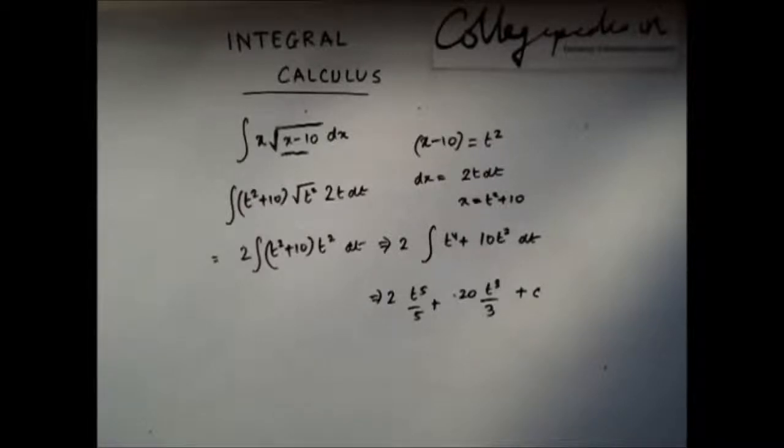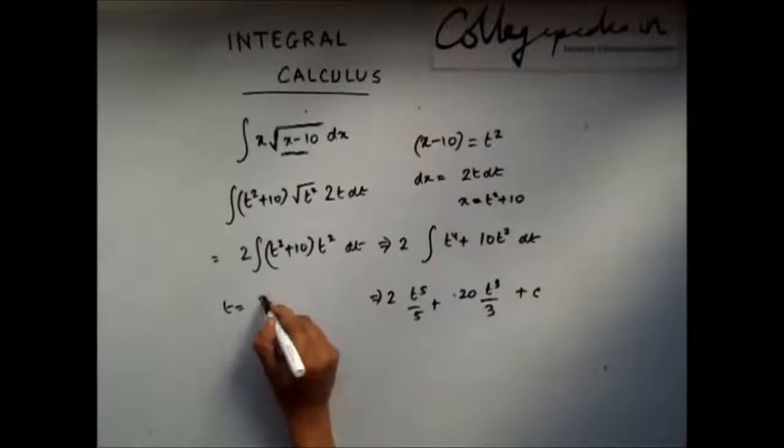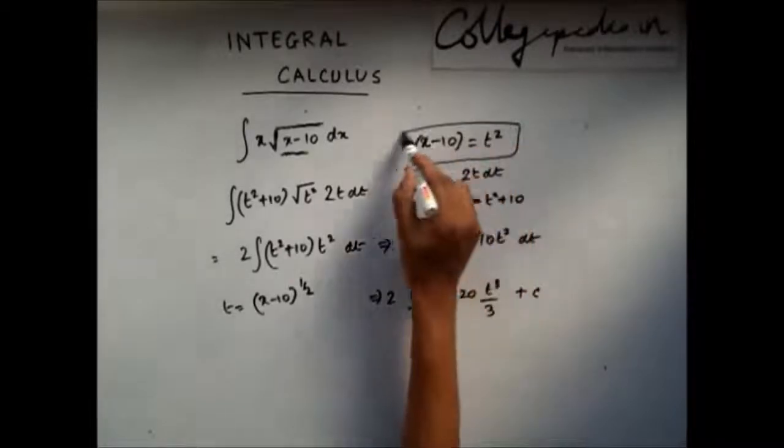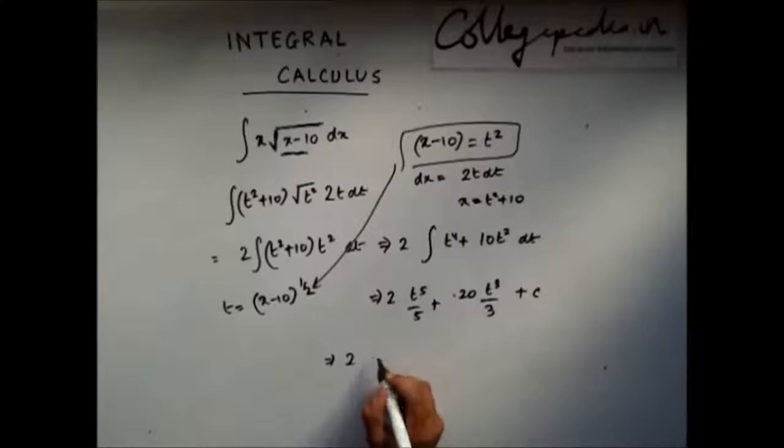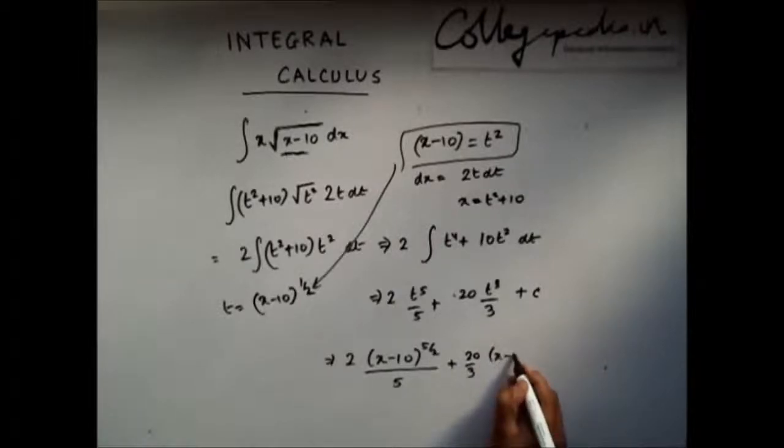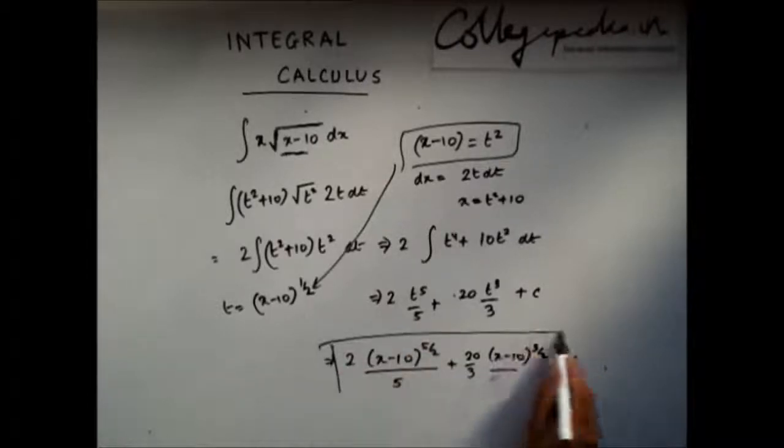Now to find the final solution, you replace t with x minus 10 to the power of half, since my t square is x minus 10. The answer comes out to be plus c. This is my final answer.